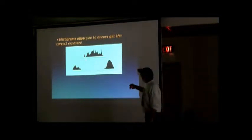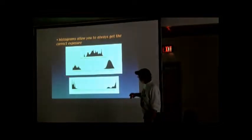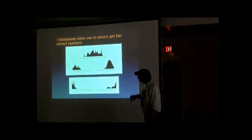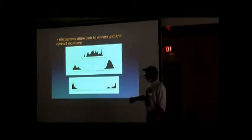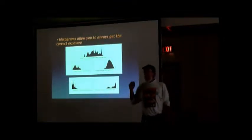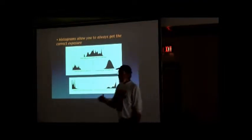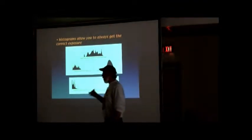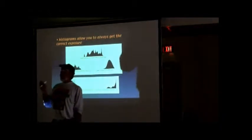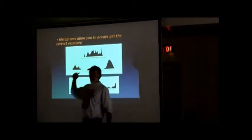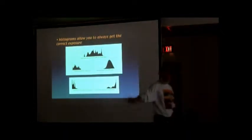Let me show you a better example. This histogram goes just like that, which means that over half of the image is dead black. No matter what you do to it, it's going to be dead black. There's no information in it for you to process. You've lost half your image — nothing you can do about it.